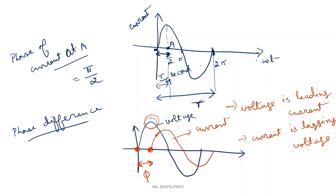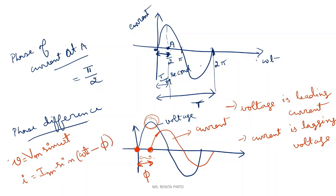The equations for this lagging scenario are: v = Vm sin(ωt) for voltage starting at the origin, and i = Im sin(ωt − φ) for current lagging by angle φ.